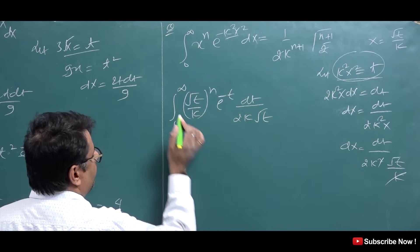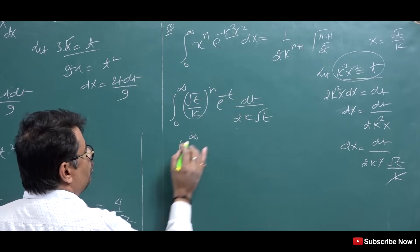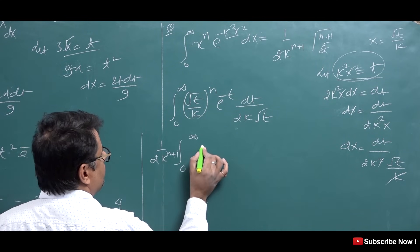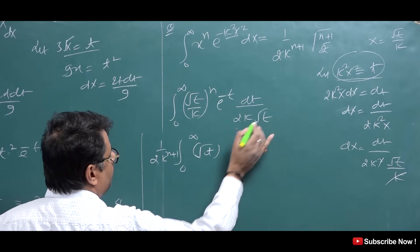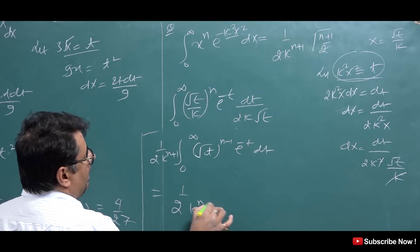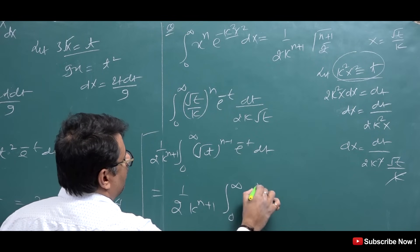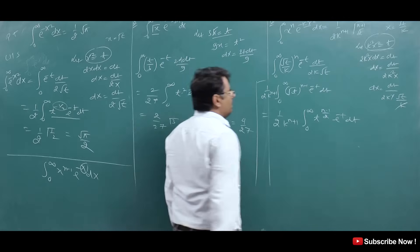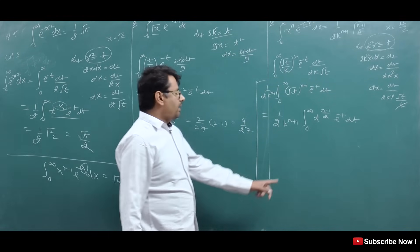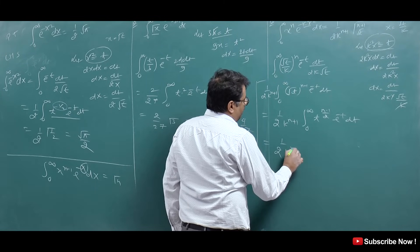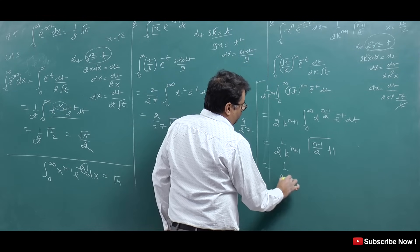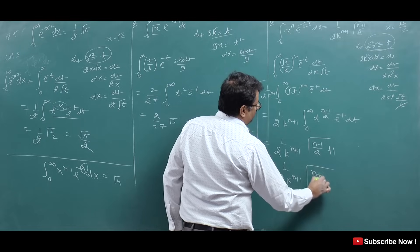Simplifying: (1/2) · (1/k^(n+1)) · ∫₀^∞ t^(n/2 − 1/2) · e^(−t) dt. The power on t is n−1 by 2 (i.e., (n−1)/2), and adding 1 gives (n+1)/2. So this becomes (1/2) · (1/k^(n+1)) · Γ((n+1)/2). Therefore the final answer is Gamma((n+1)/2) / (2 · k^(n+1)).